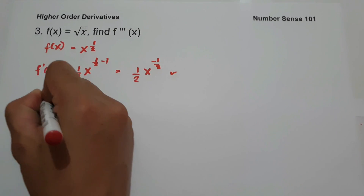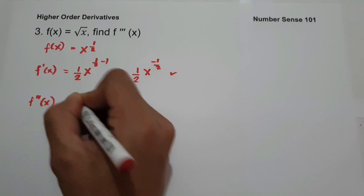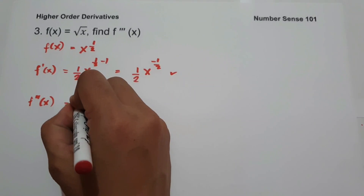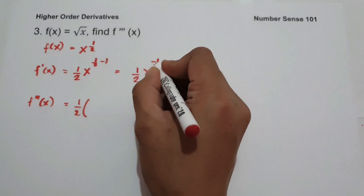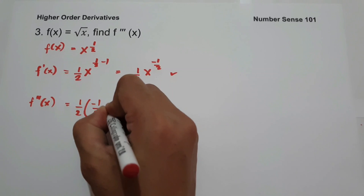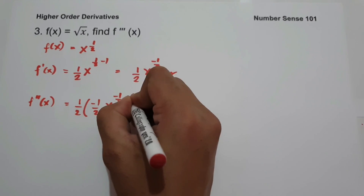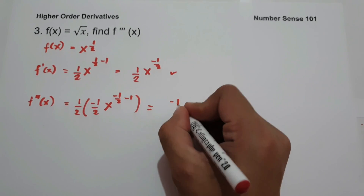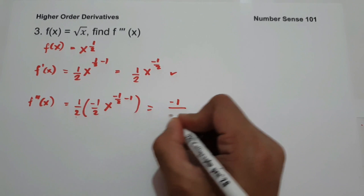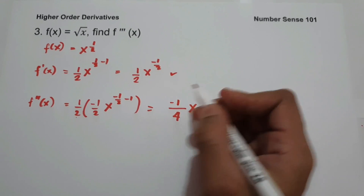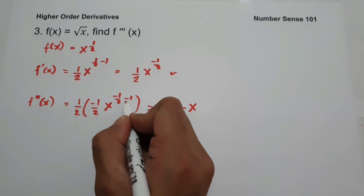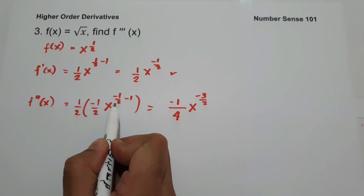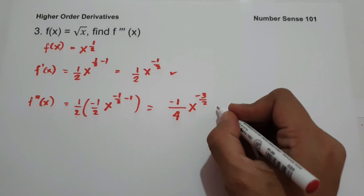We leave it in that form because we are looking for the third derivative. To find the second derivative, we take the derivative of 1 half x raised to negative 1 half. Bringing down negative 1 half: 1 half times negative 1 half times x raised to negative 1 half minus 1. Multiplying: 1 times negative 1 is negative 1, and 2 times 2 is 4, giving us negative 1 fourth x raised to negative 3 over 2.